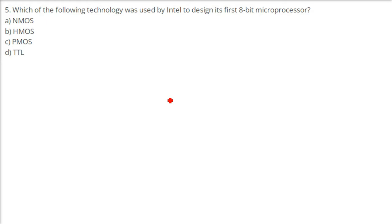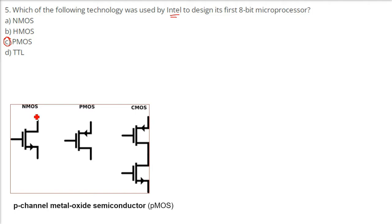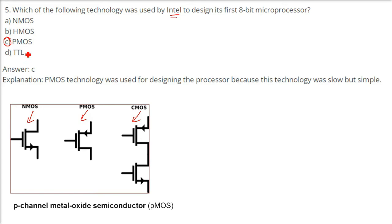Which technology was used by Intel to design its first 8-bit microprocessor? The answer is PMOS — P-Channel Metal Oxide Semiconductor. NMOS, PMOS, and EMOS are all technologies. PMOS was used for designing the first processor because this technology was slow but quite simple at that time, after which technology advanced and other things came.